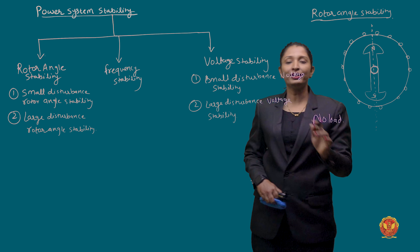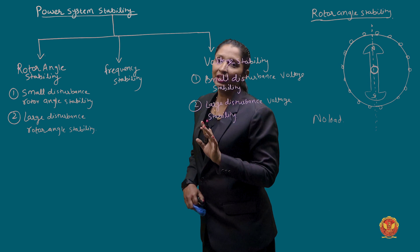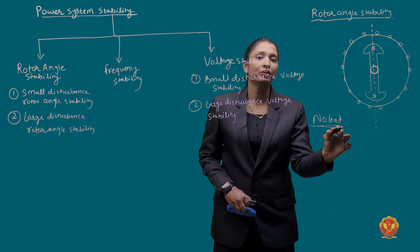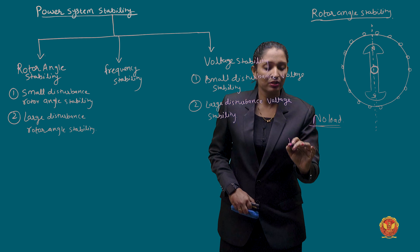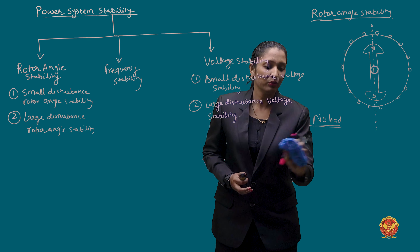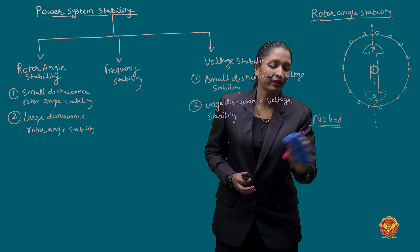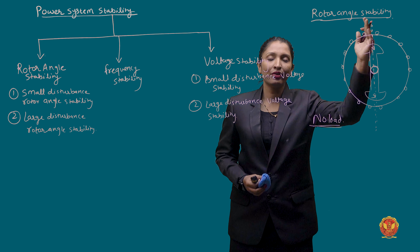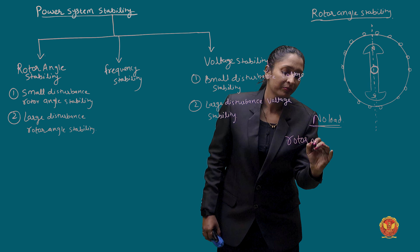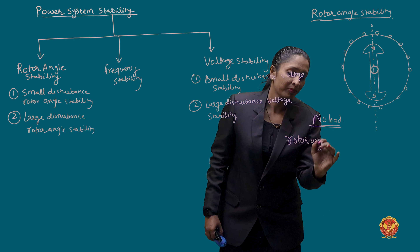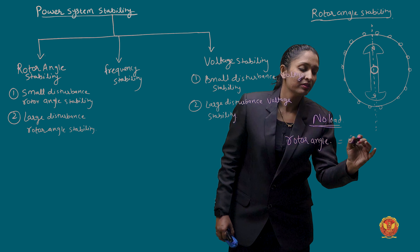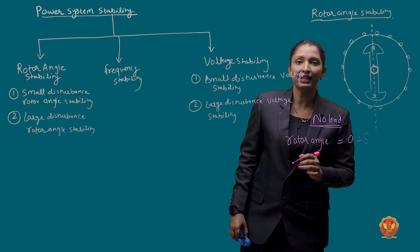The delta will remain zero at no load. The voltage angle, or the rotor angle — what is the rotor angle? The two axes are aligned, so the rotor angle is zero. How do you represent it? It is represented as delta.